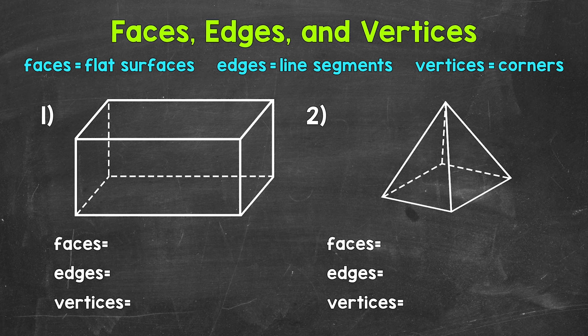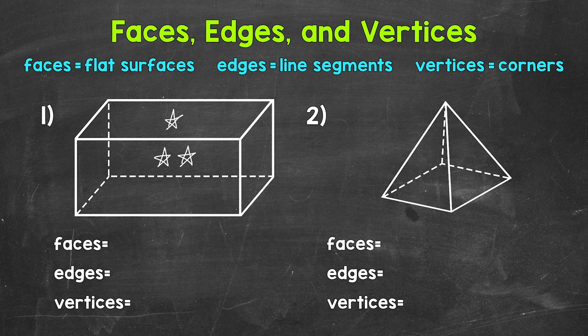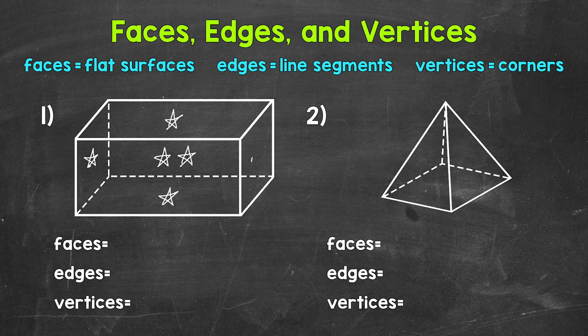Let's start by identifying and counting all of the faces. Remember, those are the flat surfaces that make up this rectangular prism. We will start with the face up front, so that's 1. Then there's a face in the back, that's 2. Then we have a face up top, that's 3. And then the bottom, that's 4. Then we have a face to the left over here, that's 5. And then 1 to the right, that's 6. So 6 total faces.